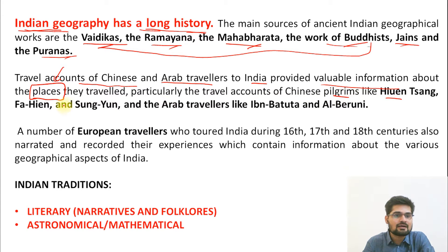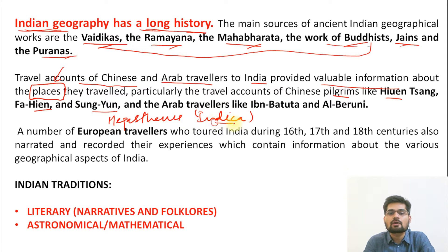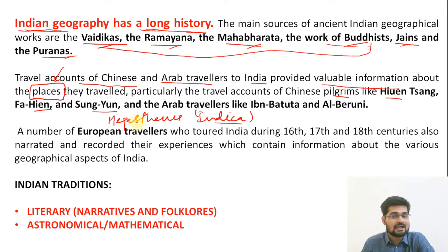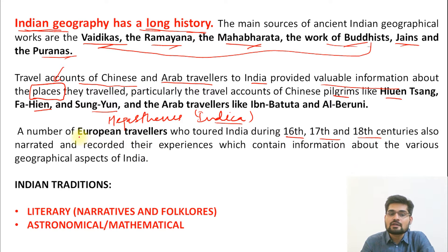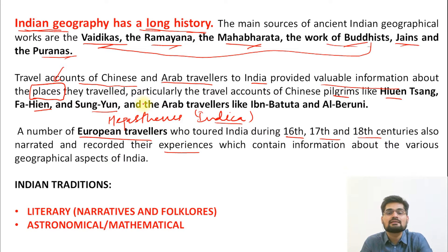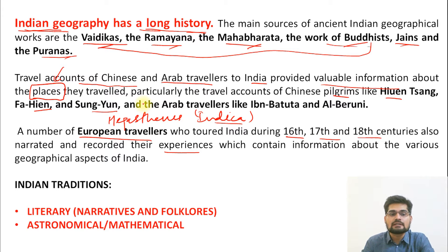Chinese pilgrims like Huensang, Fahiyan, and Sangyun, and also Megasthenes who wrote Indica — these are important travelogue sources. These travelogues help us understand the relationship of people with the places mentioned in them. Later in the 16th, 17th, and 18th centuries, when India was a British colony, European travelers also came and wrote their experiences. These are the sources from which we gather information about our geographical history.